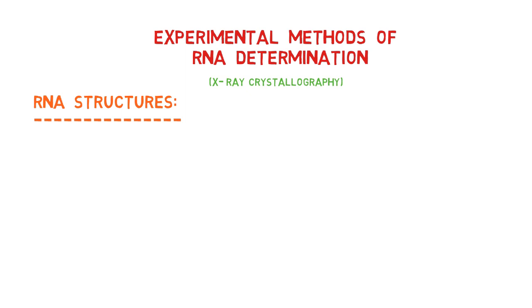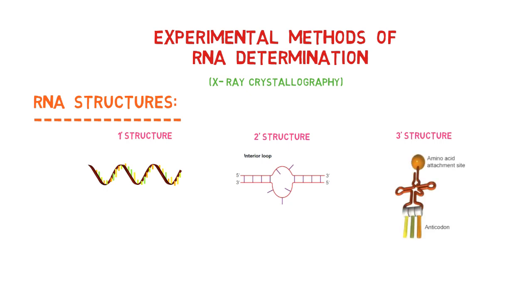RNA has three structural types: primary, secondary, and tertiary. Primary structures have a simple nucleotide sequence, secondary structures have nucleotides folded, and tertiary structures have knots.